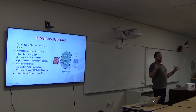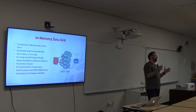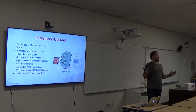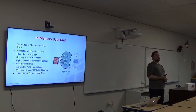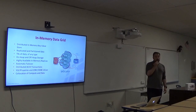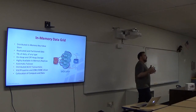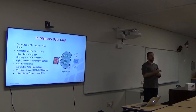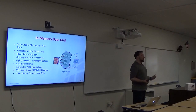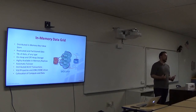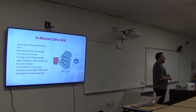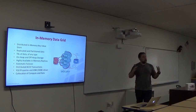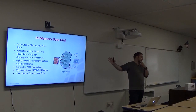Data grid. So the compute grid is all about how I parallelize my computations. The data grid is all about how I parallelize data storage. Imagine you have a terabyte of data, 10 nodes in front of you, each node has only 100 gigabytes. So you have to split and partition your data so you can keep it across the cluster. That's what the data grid is all about. Data grid is the biggest component we have by far — probably 70% of the project is in the data grid. Everything else coalesces around this core functionality.